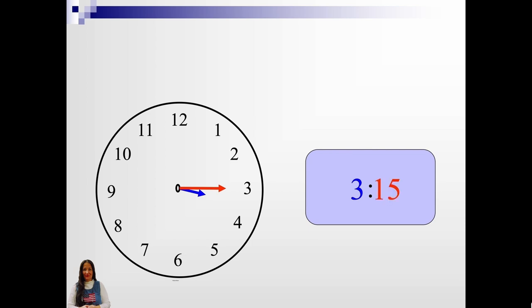3:15. That's what the digital clock says. And analog clock. What time is it? 3 o'clock. I put the hours in blue so you can see. And I put the minutes in red on the digital clock.